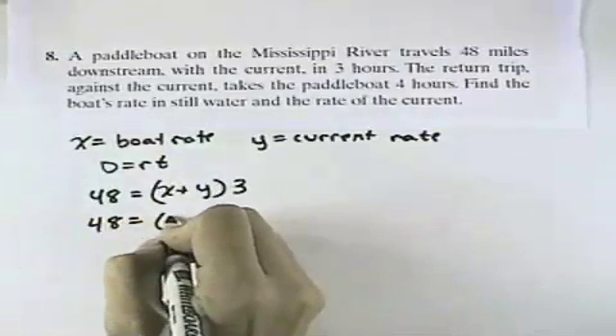So our second step is to get equations. We know that distance equals rate times time. So we had 48 miles was covered at a rate with the current, which would be x plus y, times the time was 3 hours, while the same 48 miles in the rate the boat against the current took 4 hours.